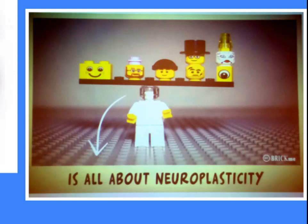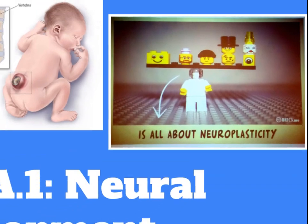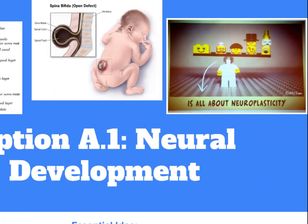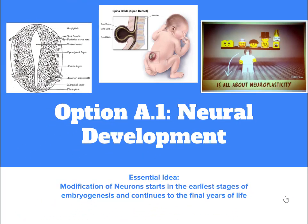Chordates, which you should recall, are organisms that are distinguished by four things: a notochord, a dorsal hollow nerve cord, pharyngeal slits, and a post-anal tail. The first topic is A1: neural development.